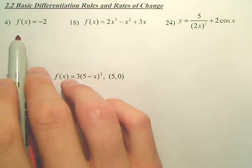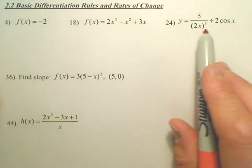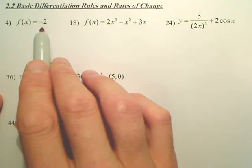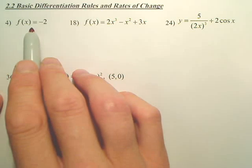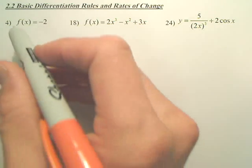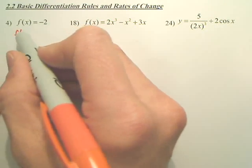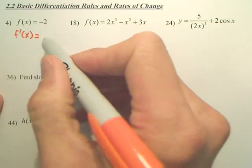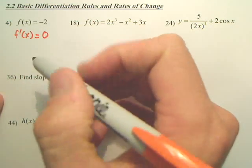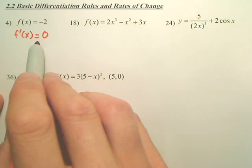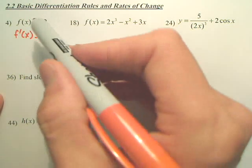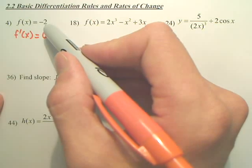We're going to take the derivative of f(x) = -2. If you think of this, it's a horizontal line at negative 2. The derivative — written with a prime sign — is zero, because the slope of a flat line is always zero. That's the rule: the derivative of any constant is zero.